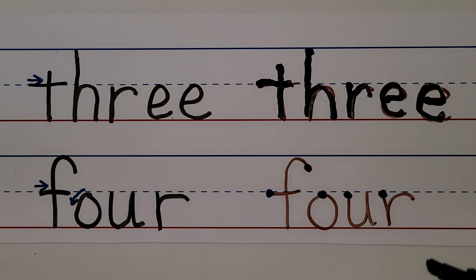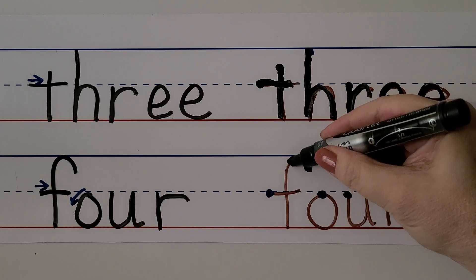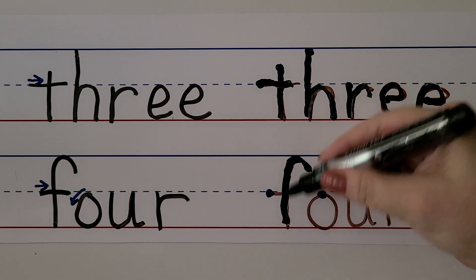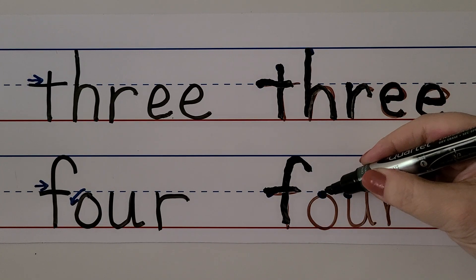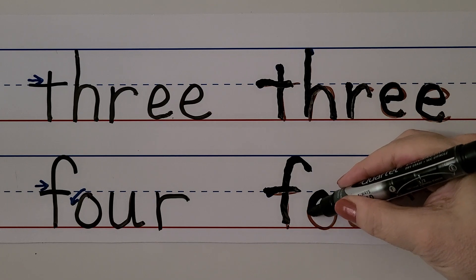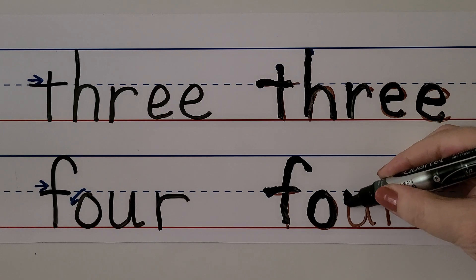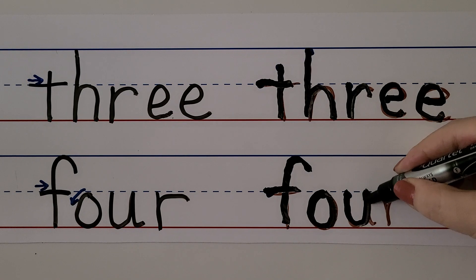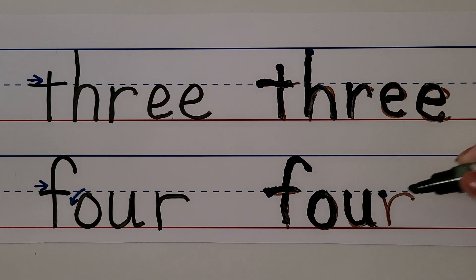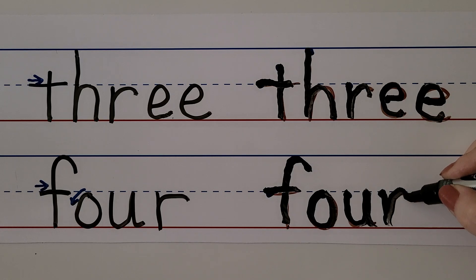We can make the word four. We make the F — we start here and we come down and then we cross it going this way. For the O, we start here and we come around and back up. For the U, we start here, we come down to the middle line and bounce and come back. For the R, we come down and we bounce around back like that. Four.